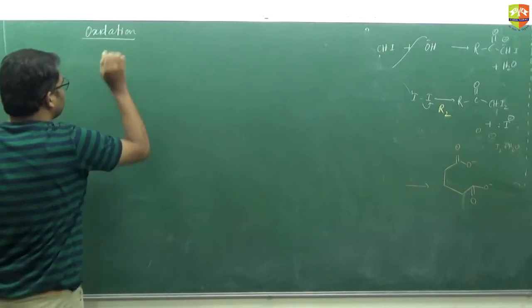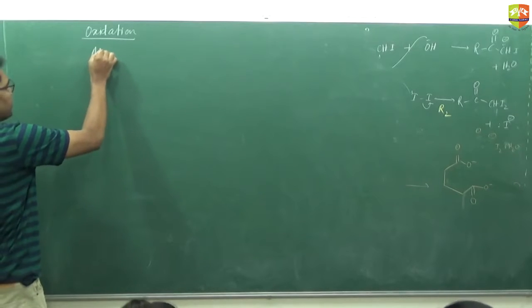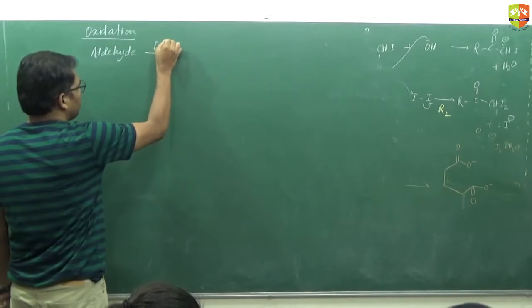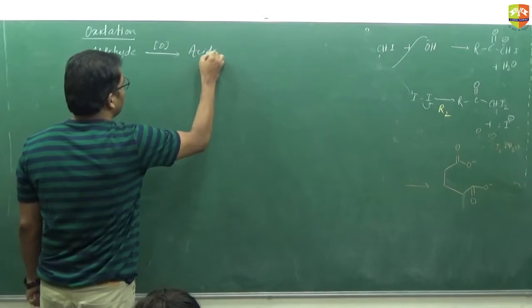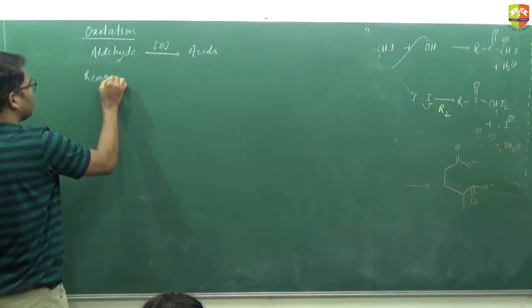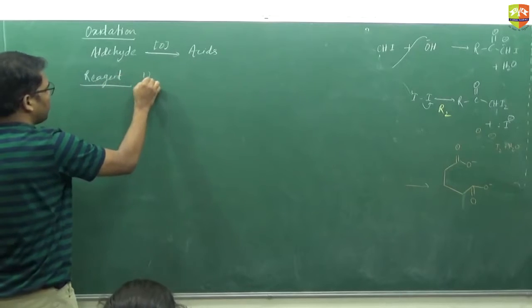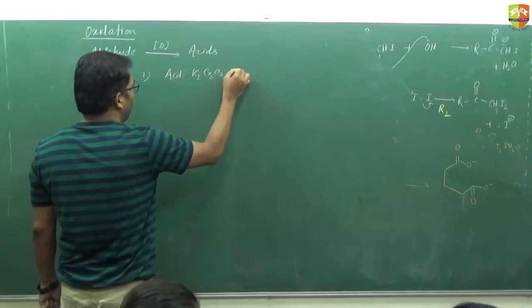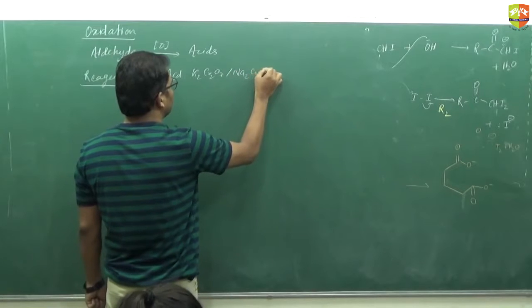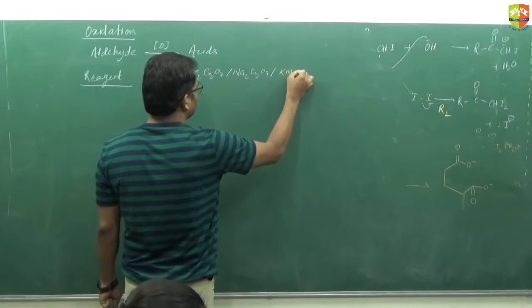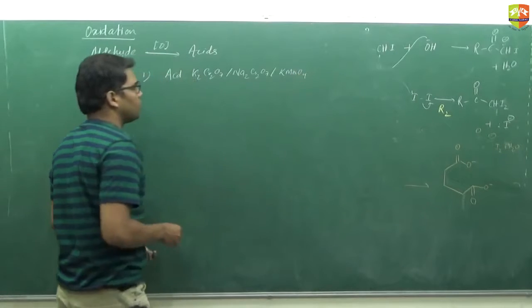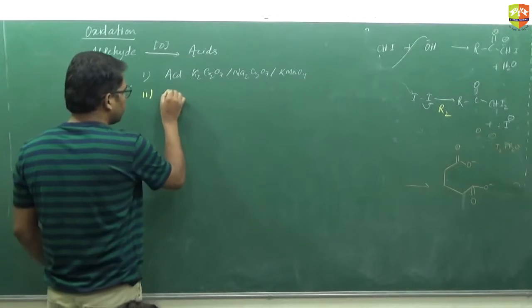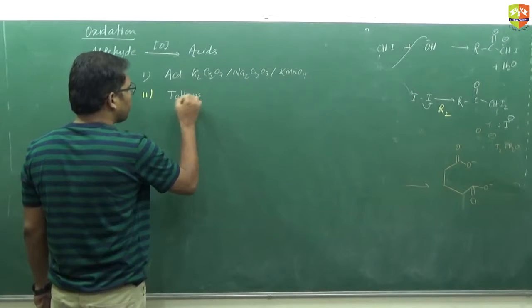You need to memorize these. For aldehydes under oxidation it gives acid. Different reagents we use are acidified K2Cr2O7, Na2Cr2O7, or KMnO4. The second one is Tollens reagent. These three reagents are tests for aldehyde or ketone.